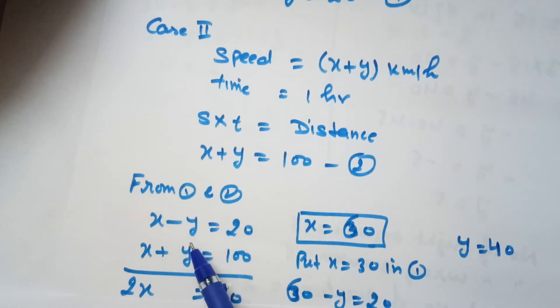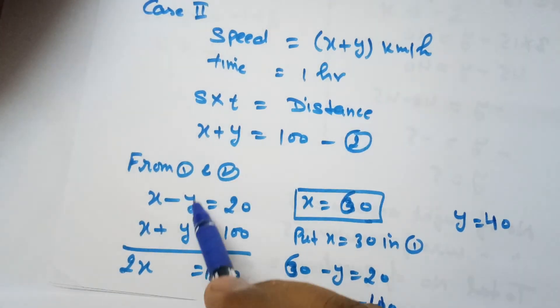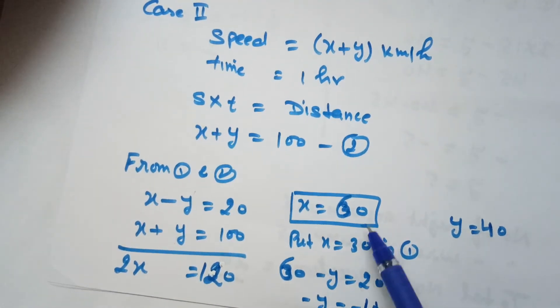When we add these two equations, we get 2x=120 because the y terms cancel each other. Therefore x=60.